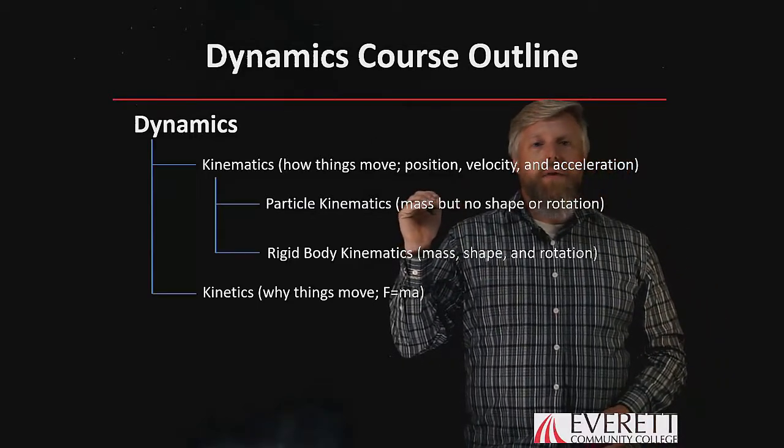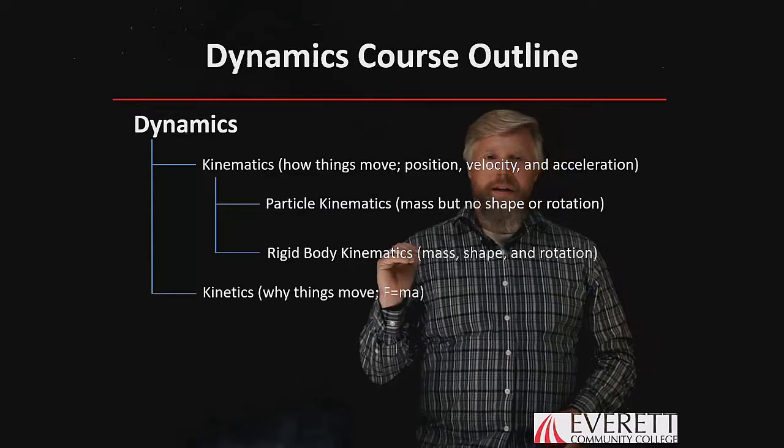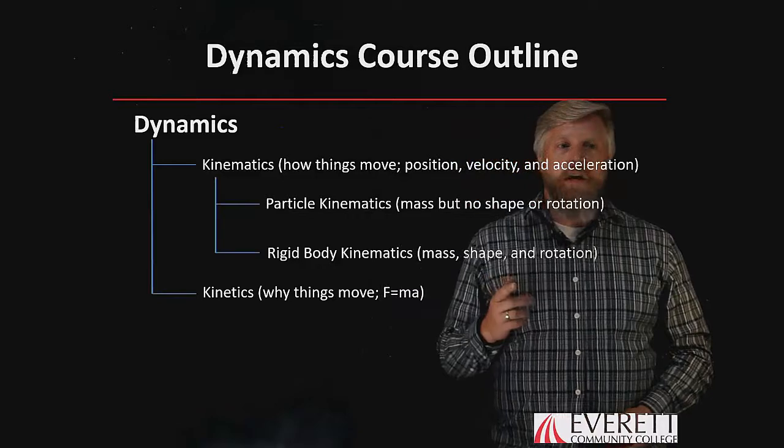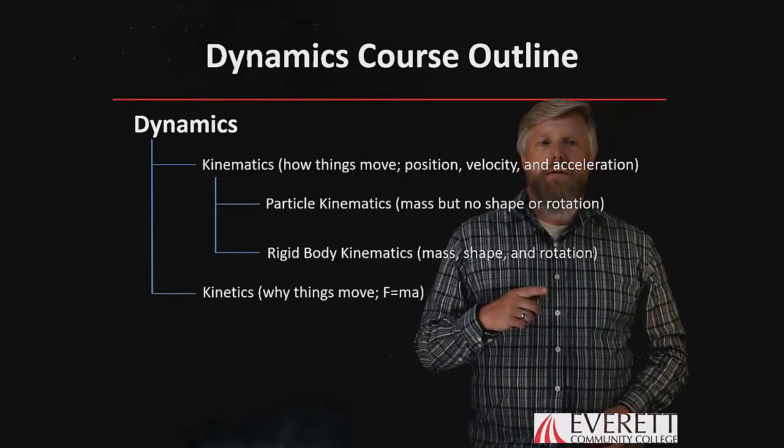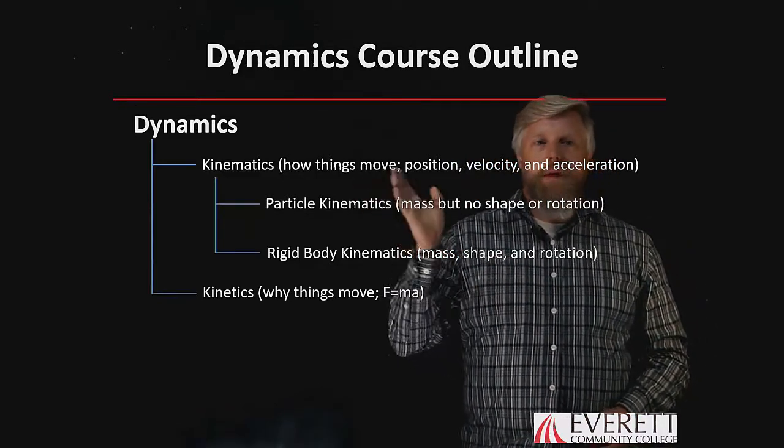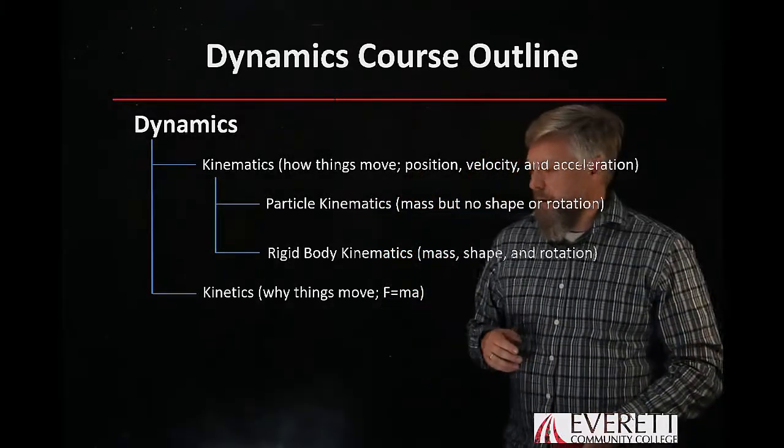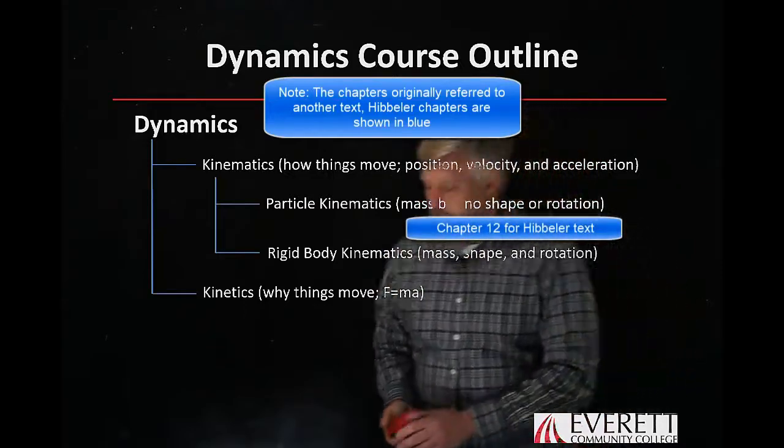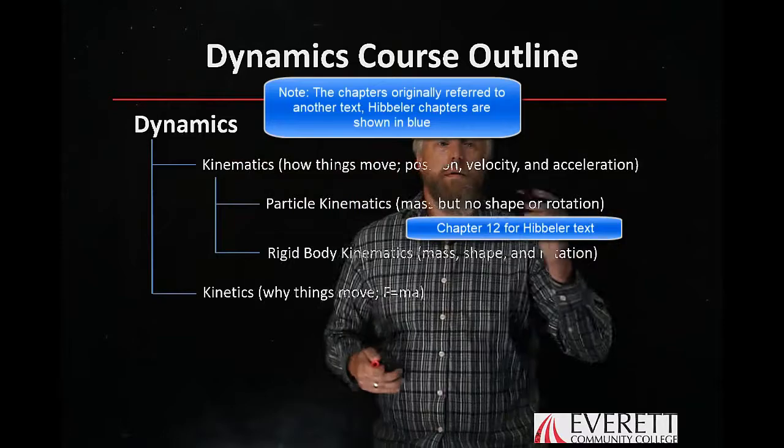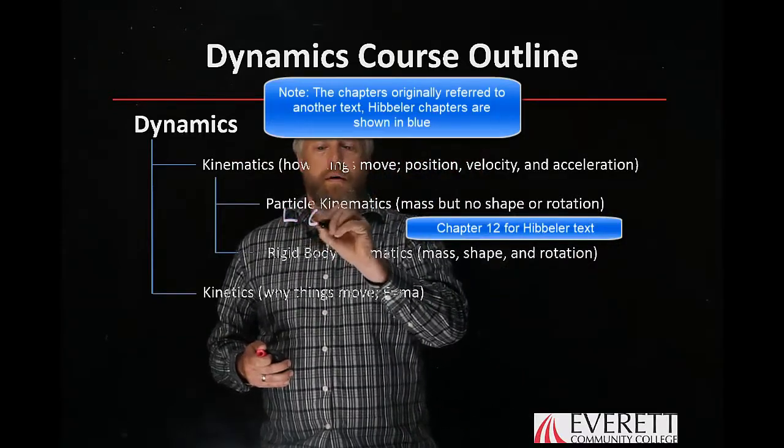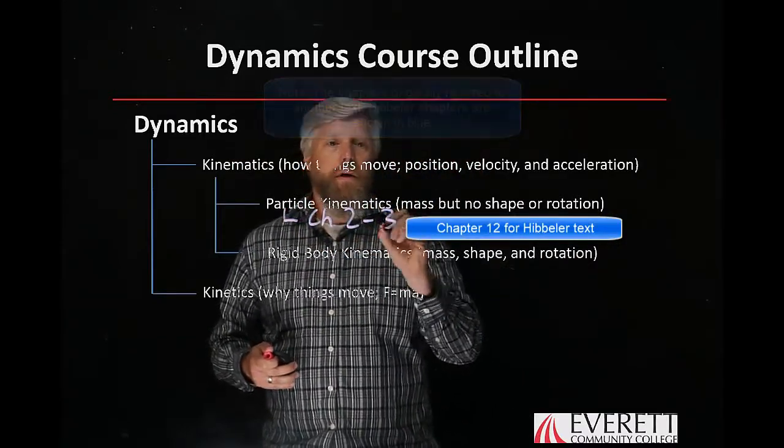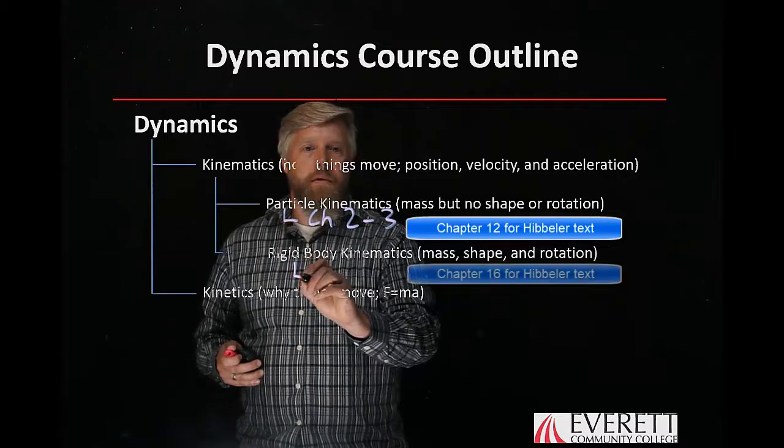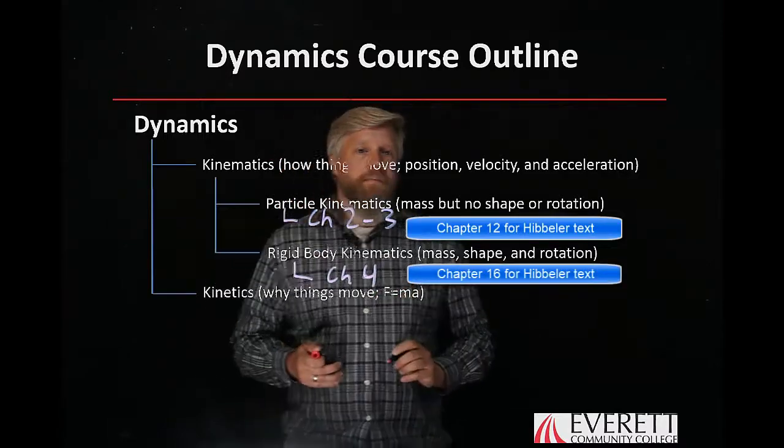After we learn about that, we take off the training wheels, and we go to rigid body kinematics, which is a little bit more realistic, where we do take in the shape of the object and the rotation of that object. So we start off, we're going to go through kinematics. We're going to start with particle kinematics. In the textbook we're using, this is chapters 2 and 3. And then we move on to rigid body kinematics, which is going to be chapter 4.